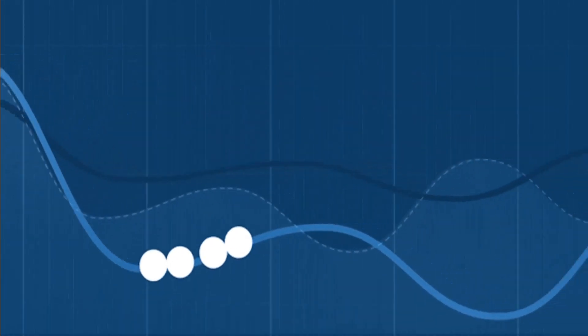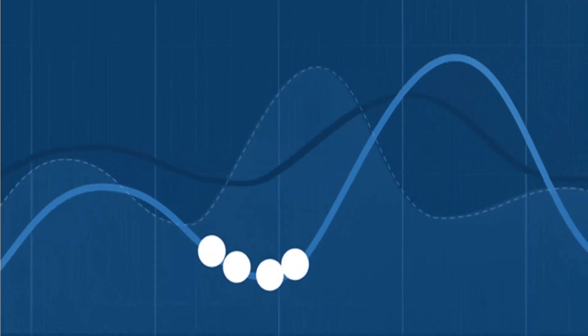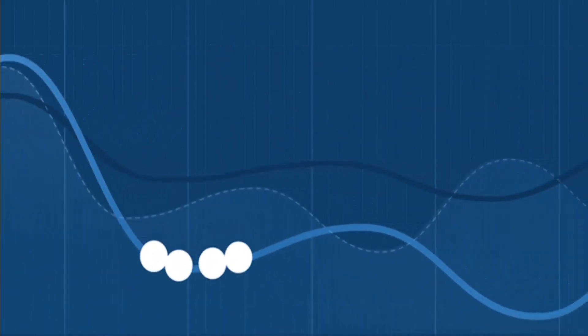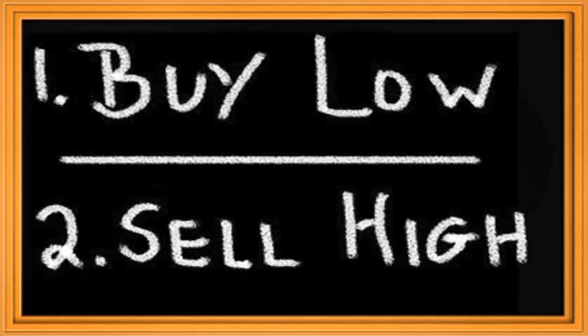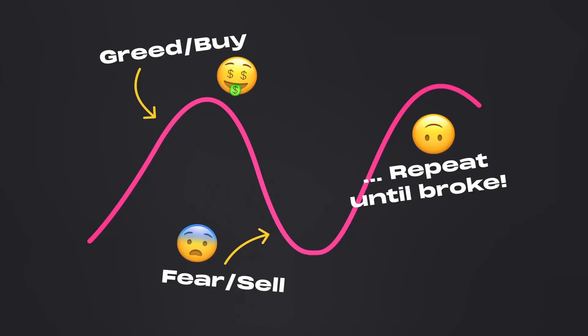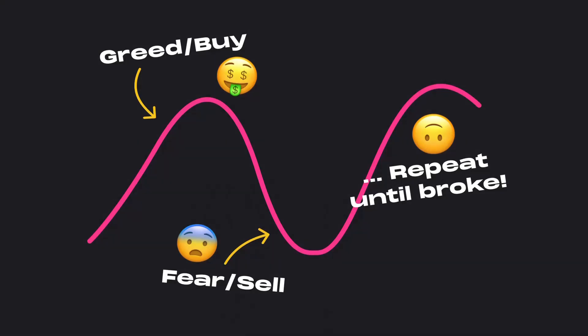Equity investments are primarily influenced by market volatility, which reflects the unpredictability of the economy. If you recall the law of demand, people buy more of a good when it's less expensive and less of it when the price goes up. The fundamental principle of investing reinforces the same thing — it guides the investor to buy low and sell high. However, most investors end up doing just the opposite; they start buying when the markets are rising and suddenly redeem upon a slump. Ultimately, the average cost of investing increases and returns fall.